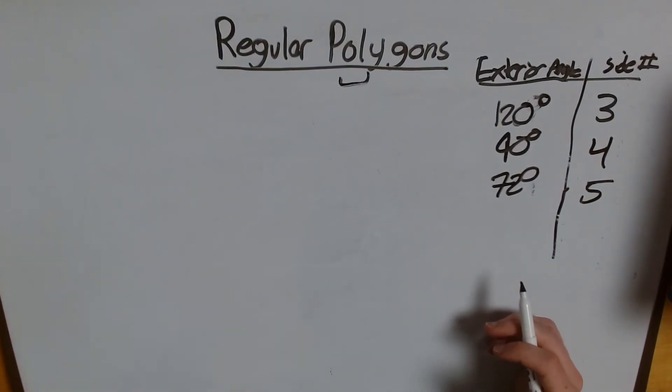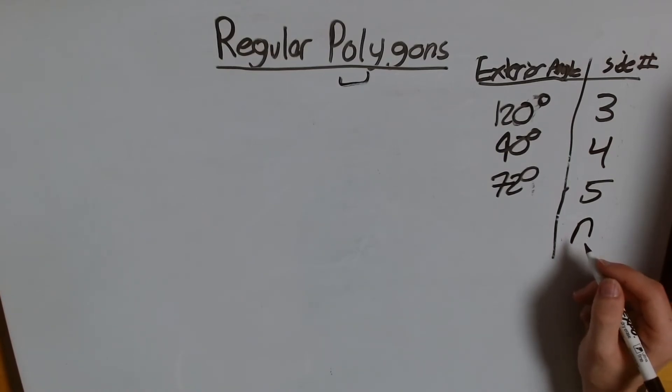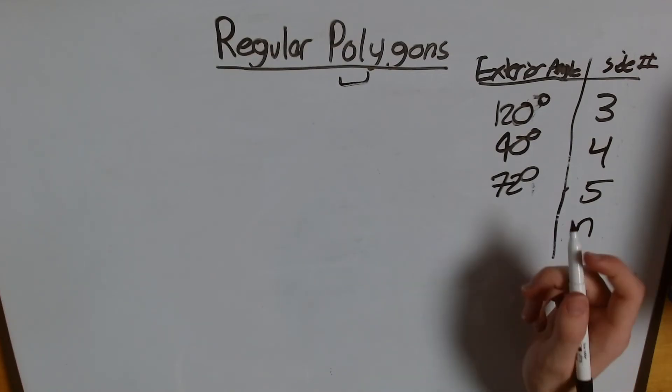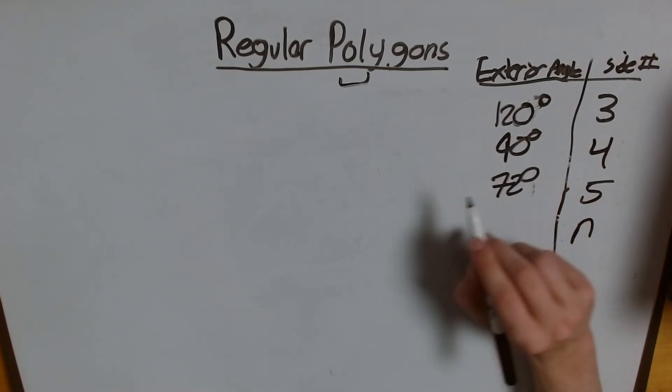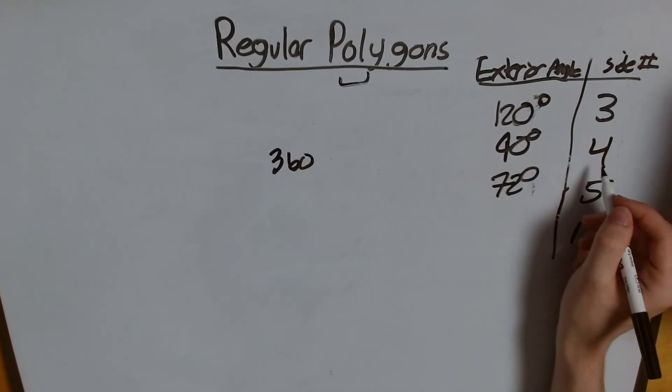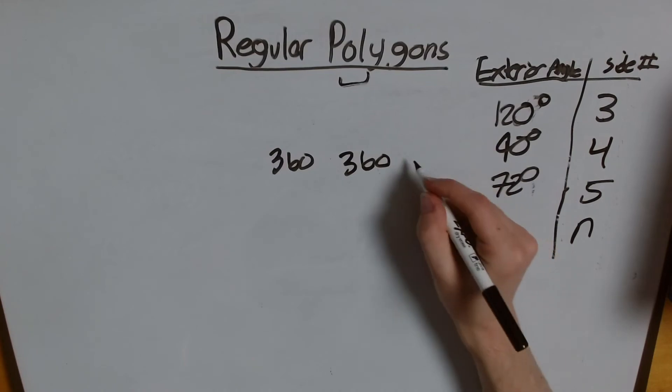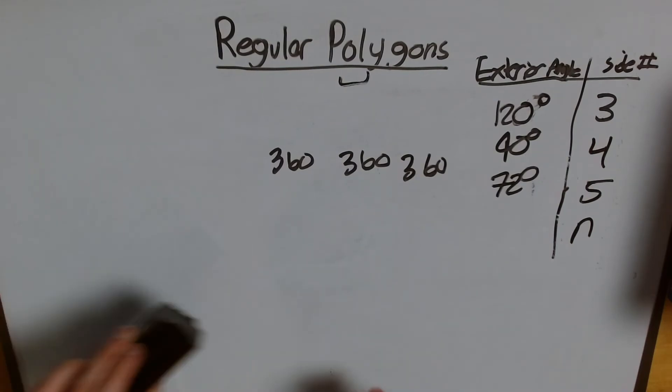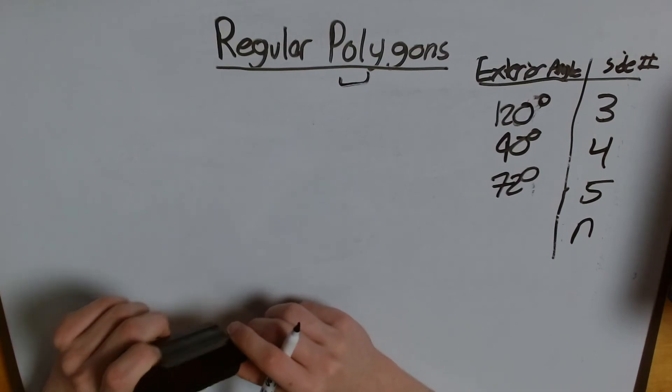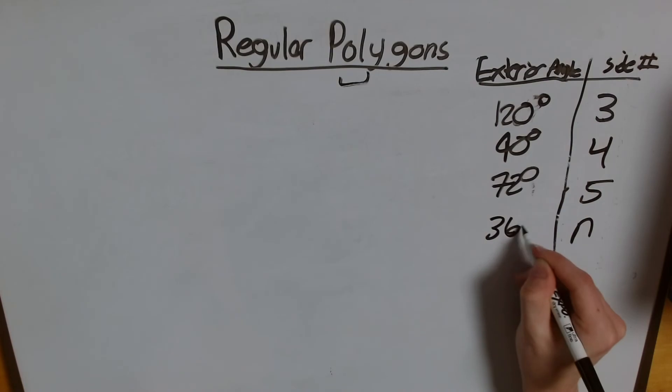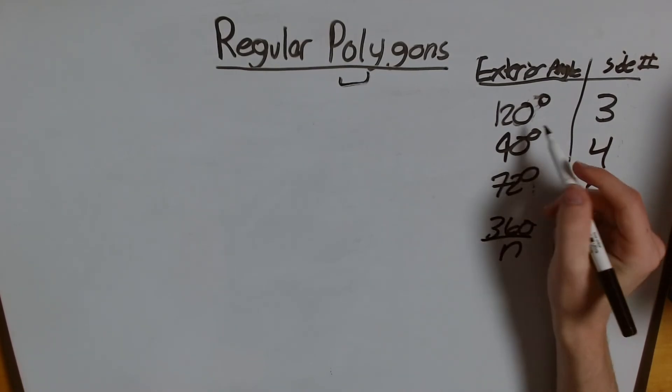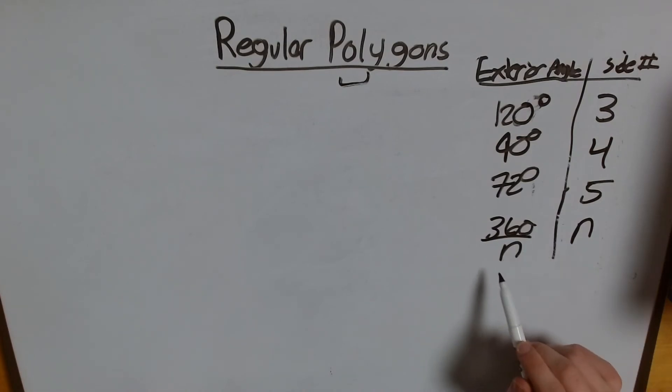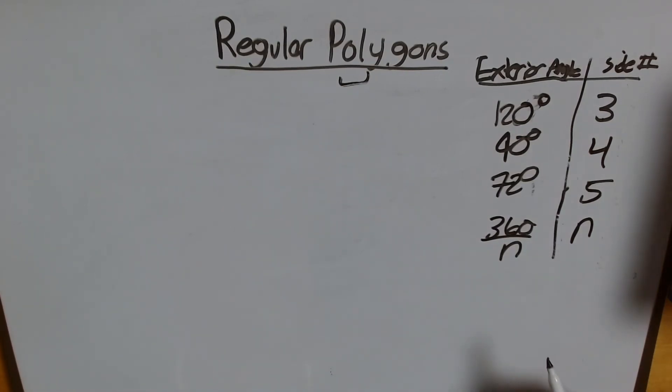Now, let's try to generalize. For n number of sides, what is going to be the measure of one exterior angle? It's a great question. Well, notice, three times 120 is 360, and four times 90 is 360, and five times 72 is 360. We can all check this on our calculator. So, what does this mean? This means that the formula has to be 360 divided by n, because 360 divided by 3 gets us 120, 360 divided by 4 gets us 90. So, 360 divided by n, for n sides, gets us the measure of an exterior angle for that.